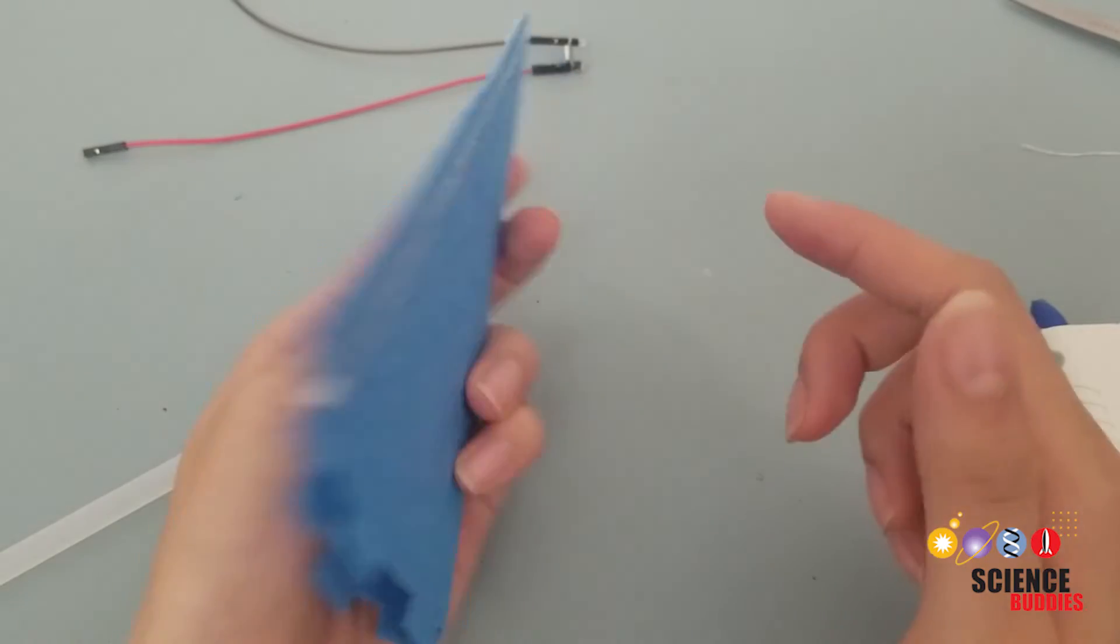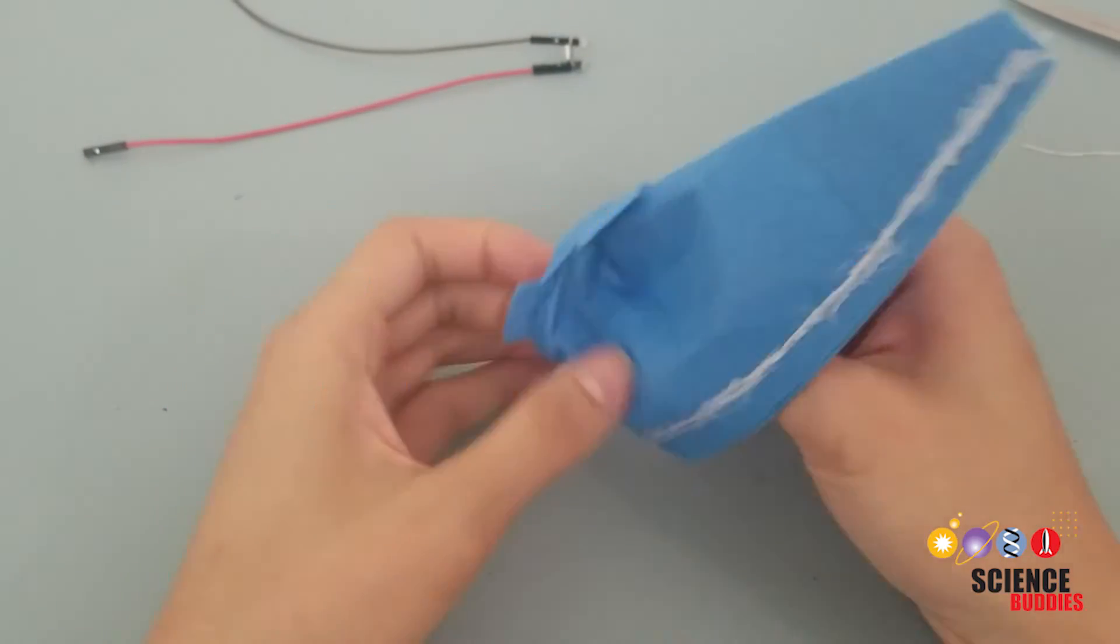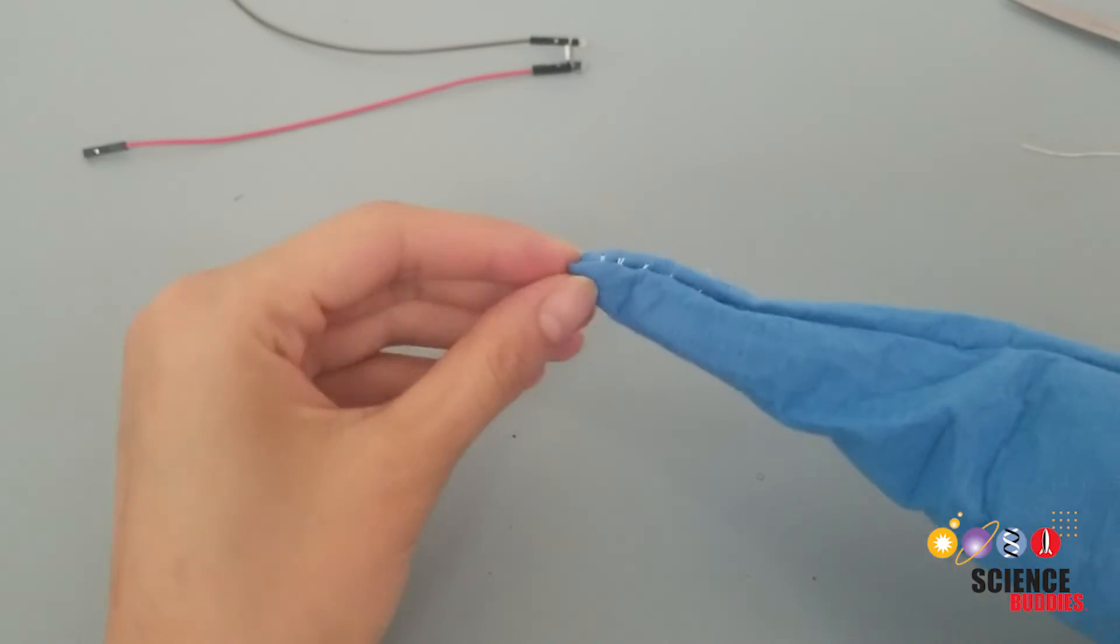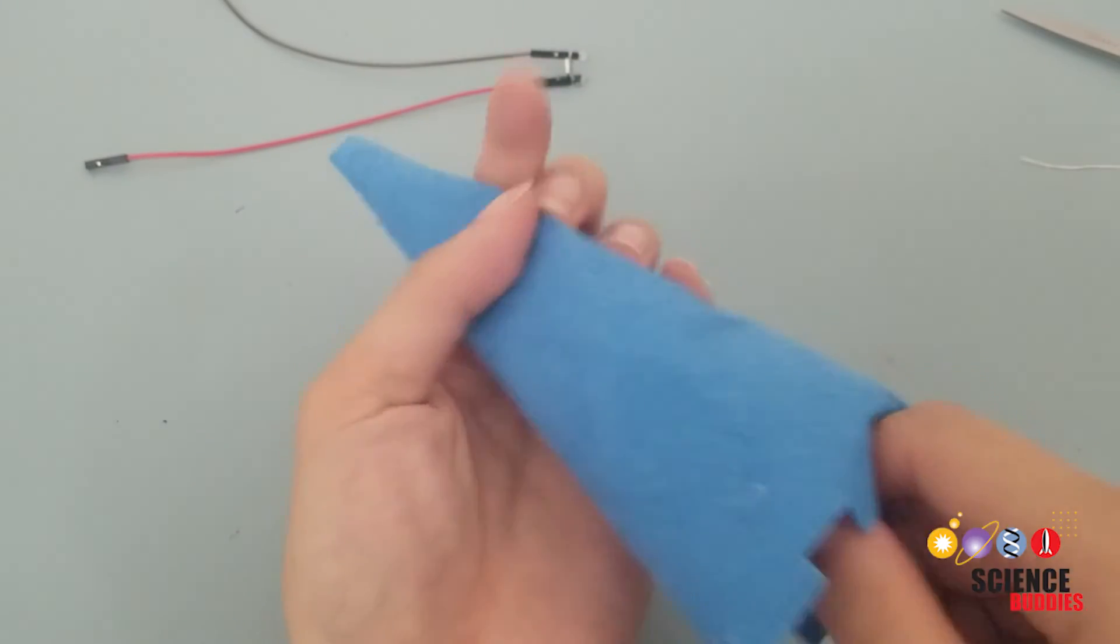Once the glue is cooled, invert or turn your unicorn horn inside out. If it is difficult to get the narrower part of the horn to invert, you can use a pen to help push it through.